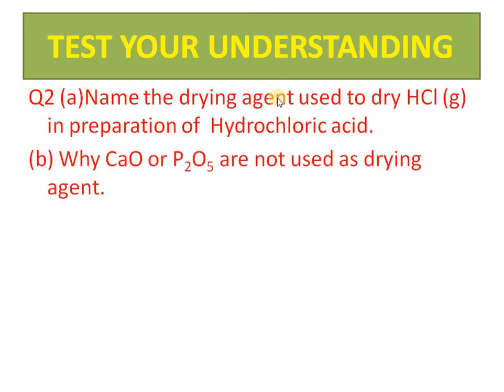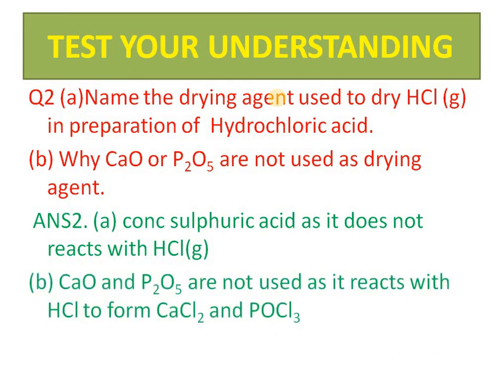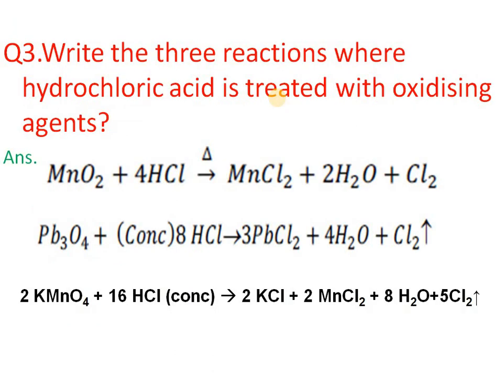Name the drying agent used to dry HCl gas. As seen in the diagram, the gas is passed through concentrated sulfuric acid — so the answer is concentrated sulfuric acid, because it does not react with HCl. Why are calcium oxide or phosphorus pentoxide not used as drying agents? Because they react with HCl: CaO reacts to give calcium chloride, and P₂O₅ reacts to give phosphorus oxychloride.